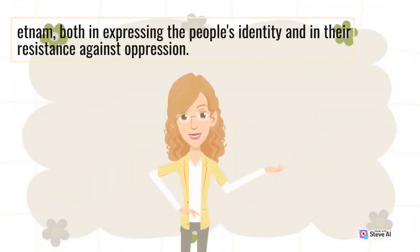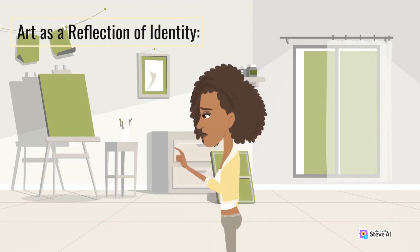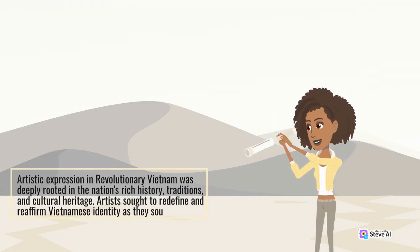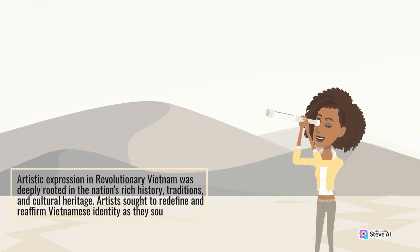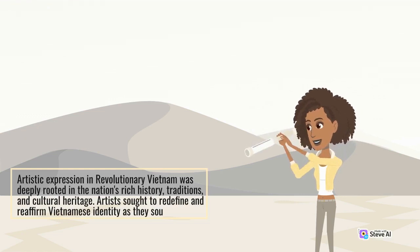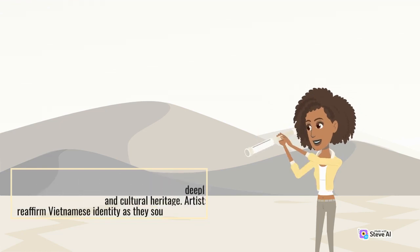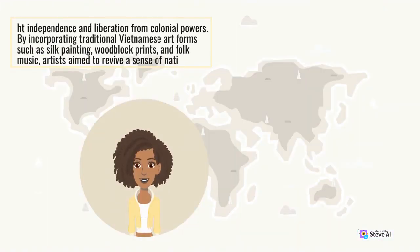This article explores the significant role that art and culture played in revolutionary Vietnam, both in expressing the people's identity and in their resistance against oppression. Artistic expression in revolutionary Vietnam was deeply rooted in the nation's rich history, traditions, and cultural heritage. Artists sought to redefine and reaffirm Vietnamese identity as they sought independence and liberation from colonial powers.